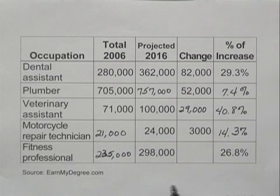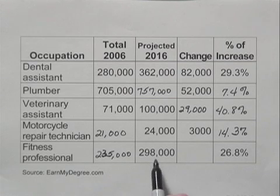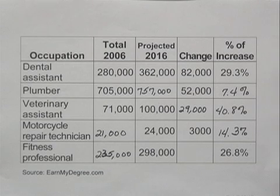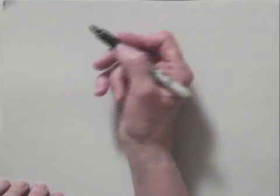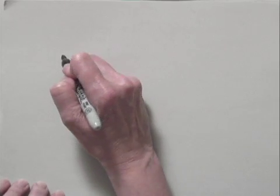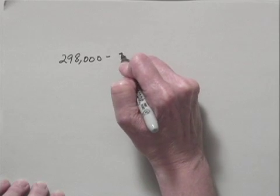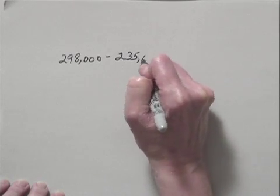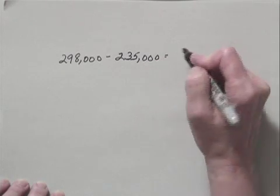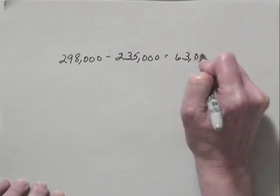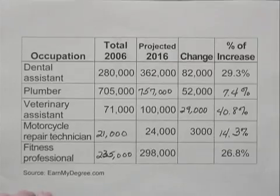And now we just need to find the change in the number of jobs. We would subtract the 2006 number from the projected number for 2016. So we would have 298,000 minus 235,000, and that is 63,000. So this is the change in the number of jobs.